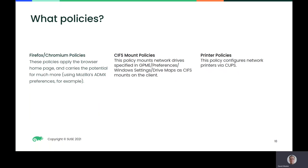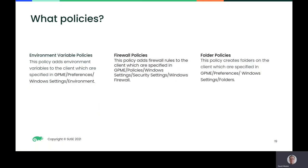Environment variable policies add environment variables to the client, specified in the Group Policy Management Editor under Preferences, Windows Settings, Environment. File firewall policies add firewall rules to the client, specified under Policies, Windows Settings, Security Settings, Windows Firewall.